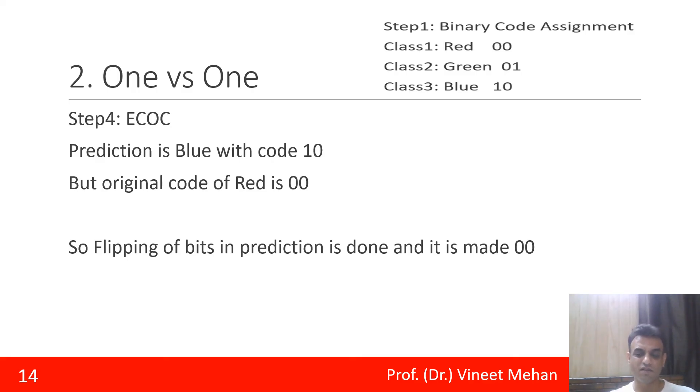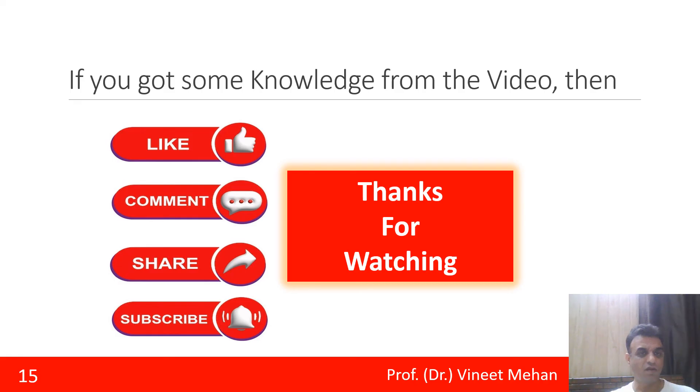So this is how error correcting output codes work for two cases: one versus all and for one versus one. So with this, we have ended the topic. If you got some knowledge from the video, then do like, comment, share, and subscribe. Thanks for watching.